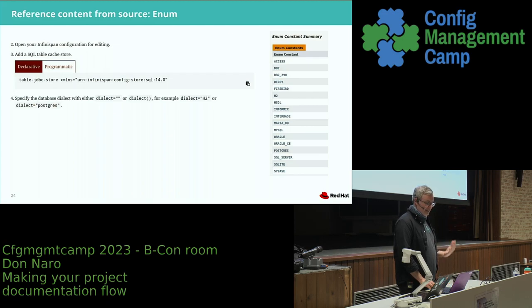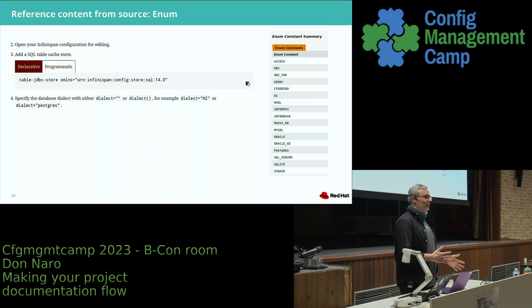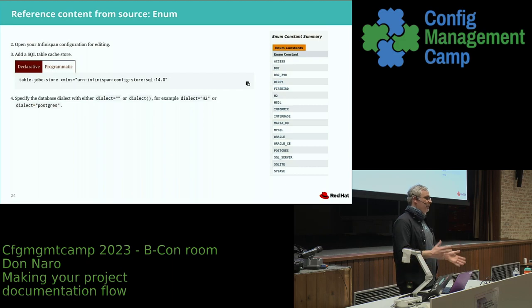Another example: there was an enum in some Java doc. Don't have a procedure that copies reference content into a table that duplicates it. In step four, you can set the database dialect — and instead of listing all the dialects in a table, just say 'look at the enum.' Because if you duplicate it, the developer is maintaining the Java docs, and you'll have that disconnect. If they add a new database dialect, it shows up in the Java docs but might not show up in the documentation source — then you're out of sync and inaccurate.